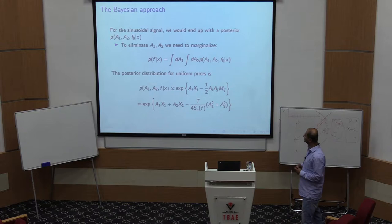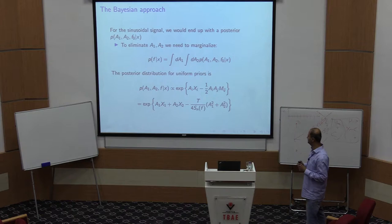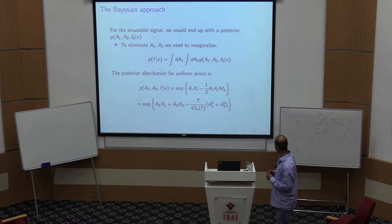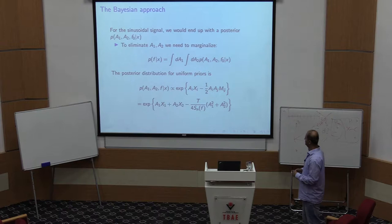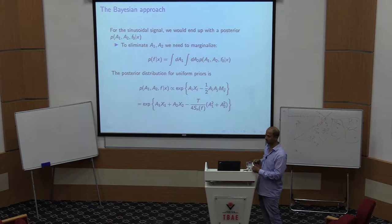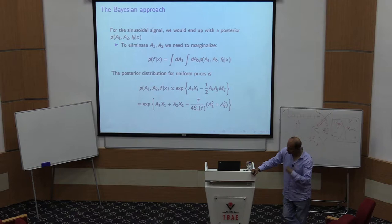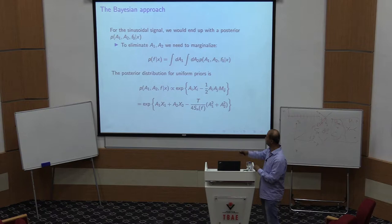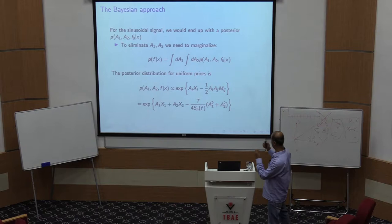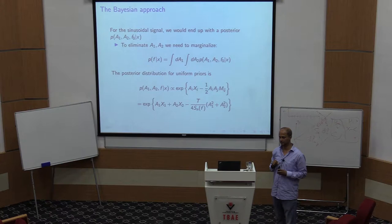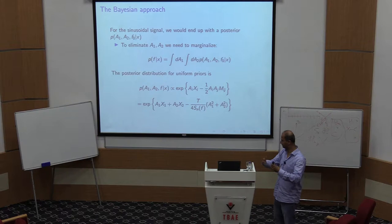For the simple model, taking a uniform prior, you end up with a posterior on a1, a2, and frequency f0. A Bayesian would then find the distribution for f0 by integrating — averaging the full distribution over the unwanted parameters a1 and a2. As a rough caricature: a frequentist likes to differentiate, a Bayesian likes to integrate.